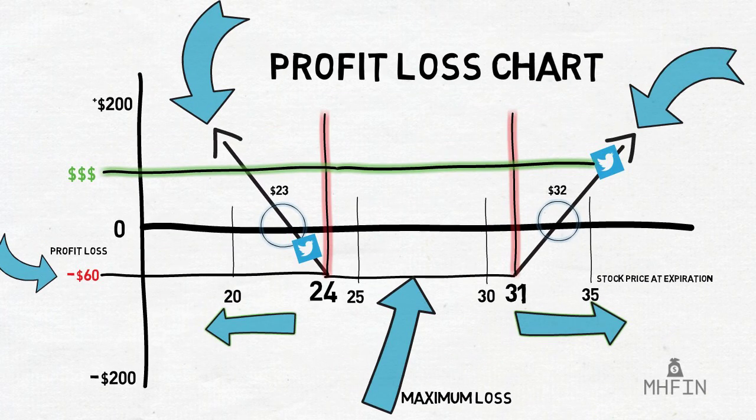As you can tell from our examples, in order to generate a profit in this particular trade, you need the stock to expire well below or above the breakeven points in order to make money. If it stays stagnant and falls between these breakeven points, you will lose money.